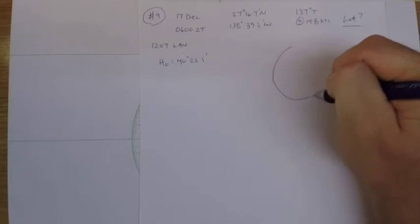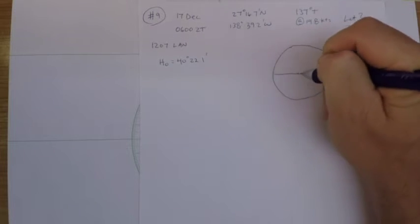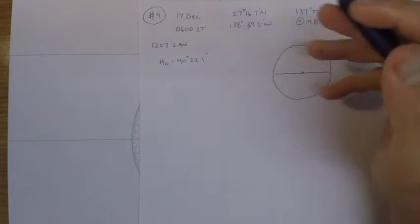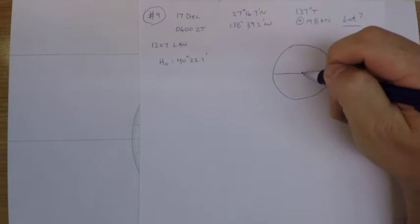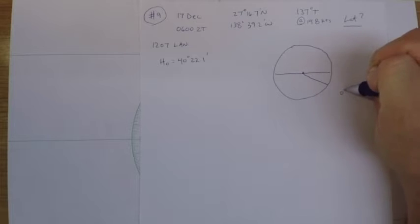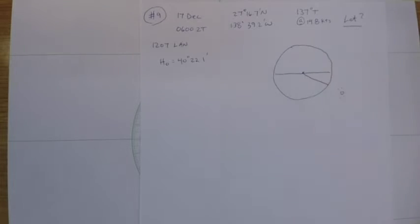I also like to draw out the situation that is happening here. And so it is 17 December, so the Sun is definitely in the southern hemisphere. It's almost near the solstice, which thankfully the Coast Guard gave us, because that probably makes our declination a little bit easier.